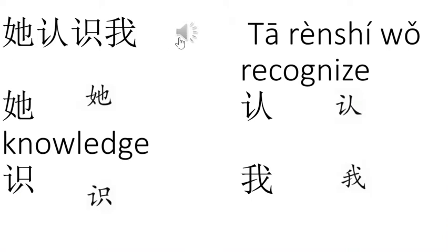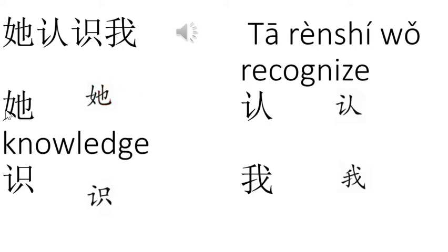Chinese. Ta — this is how you spell it. One, two, three, four, five, six. And ta, this is for a female. You also have ta for a male, which I'm going to show you in the next lesson.